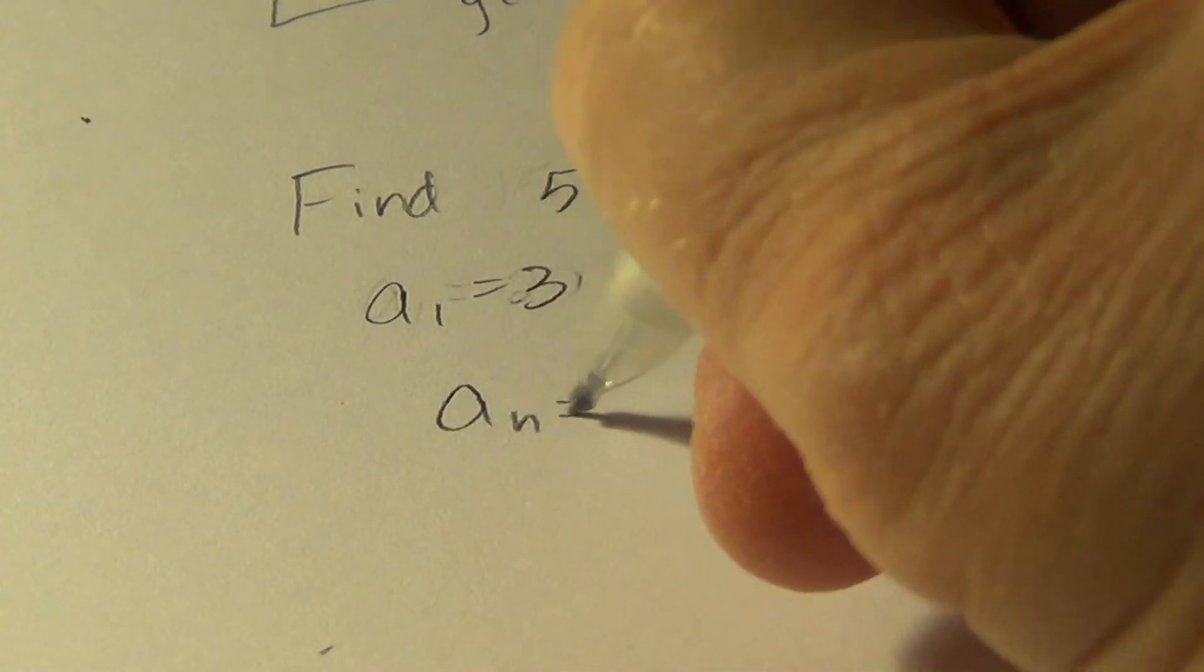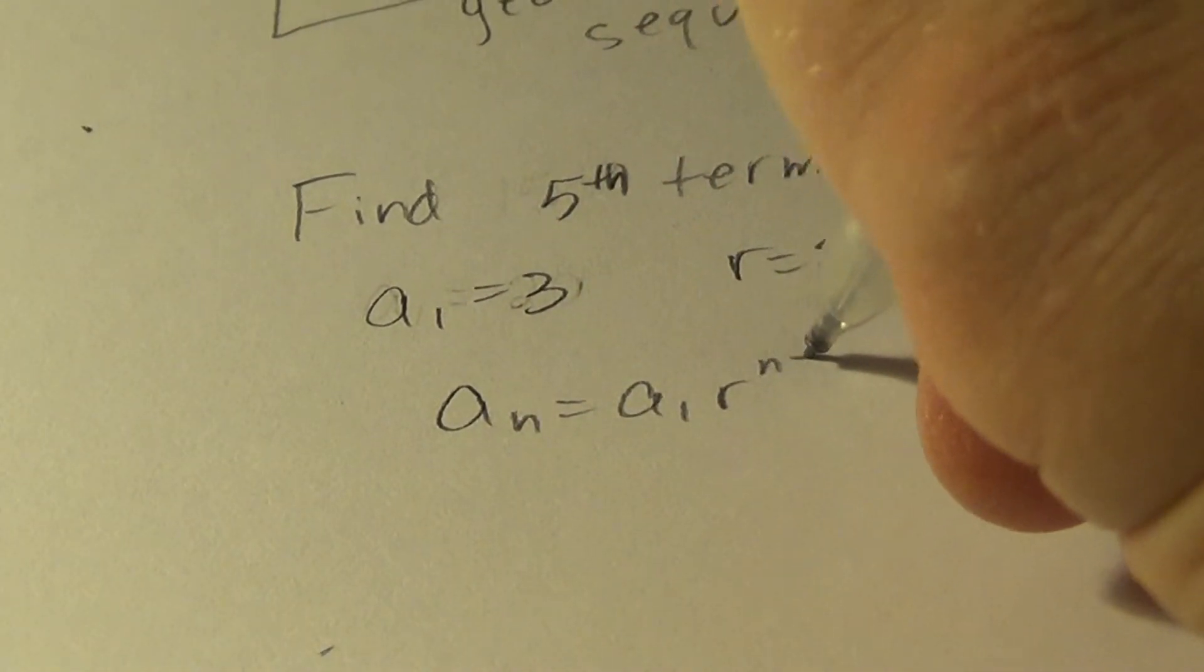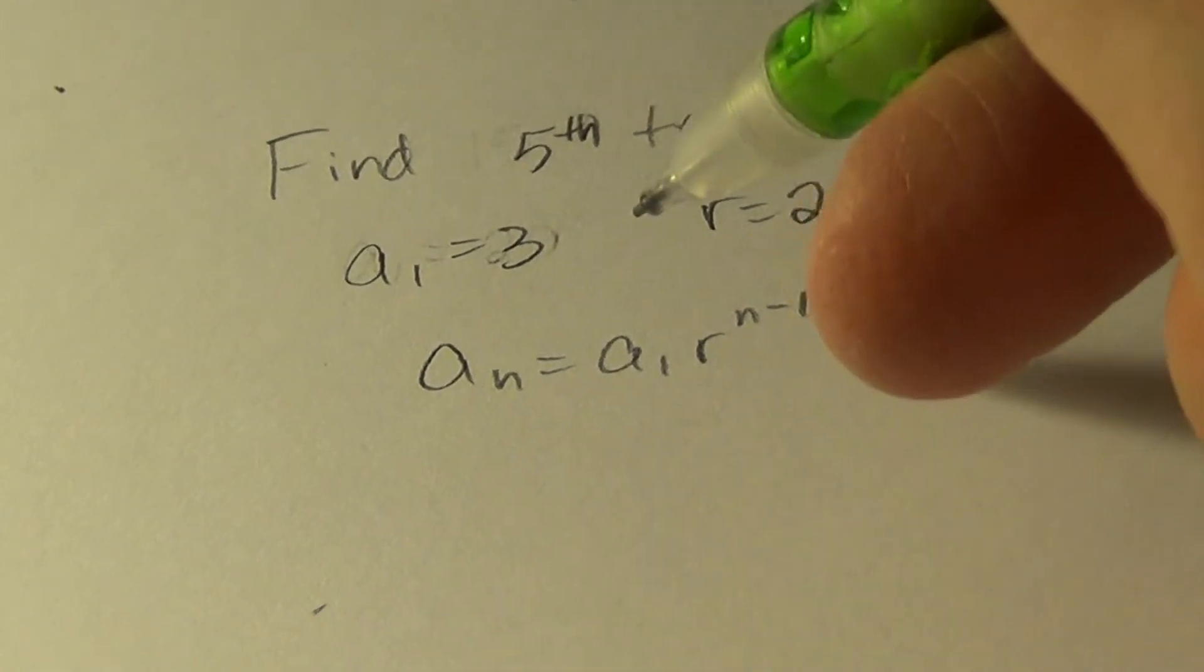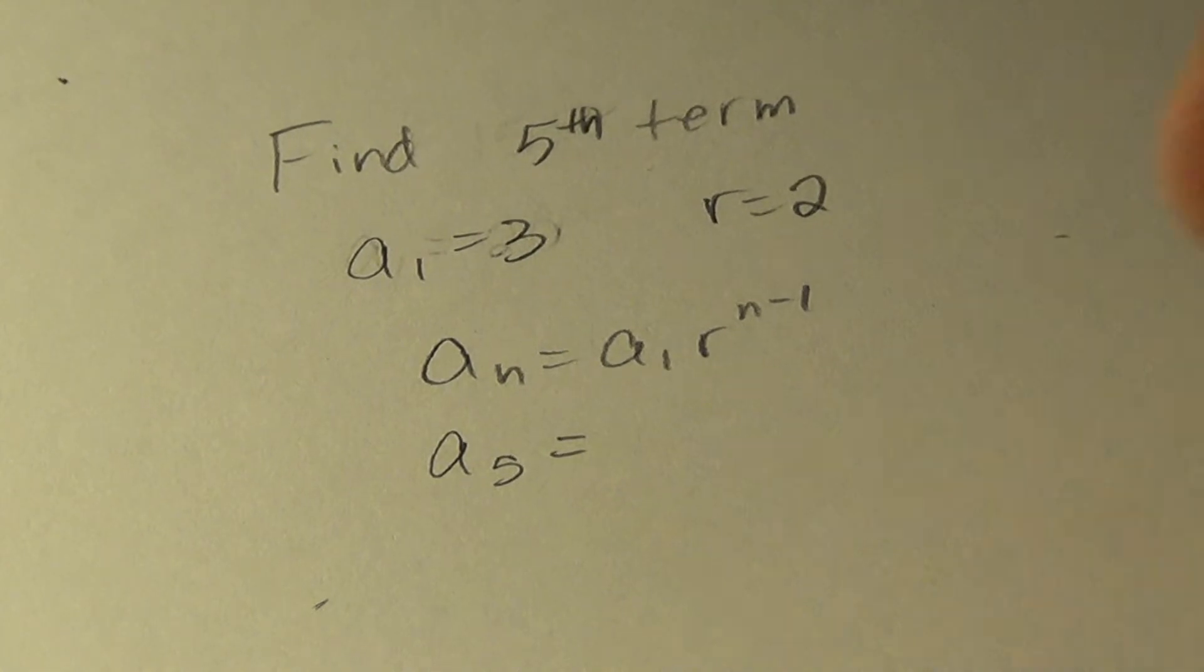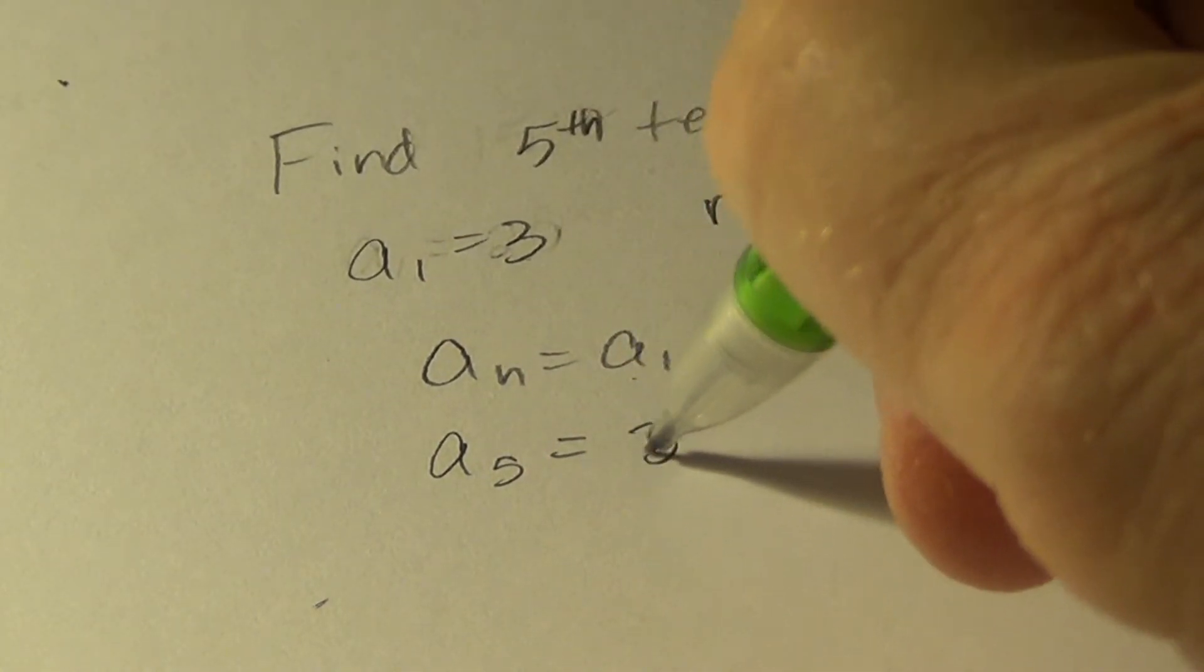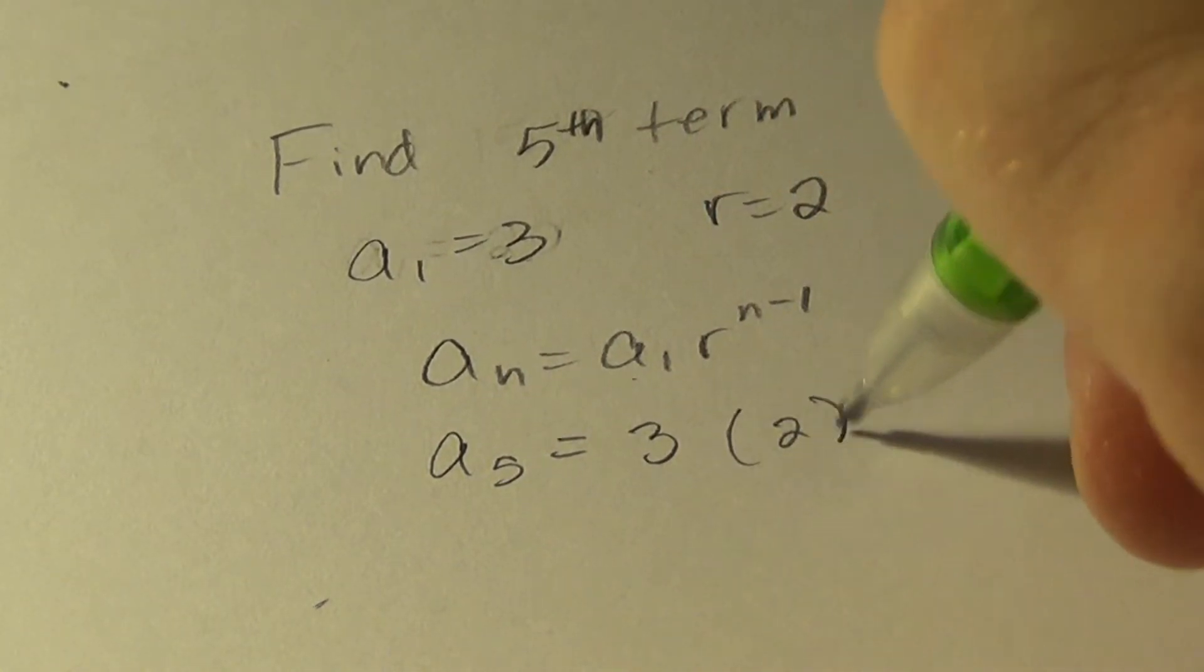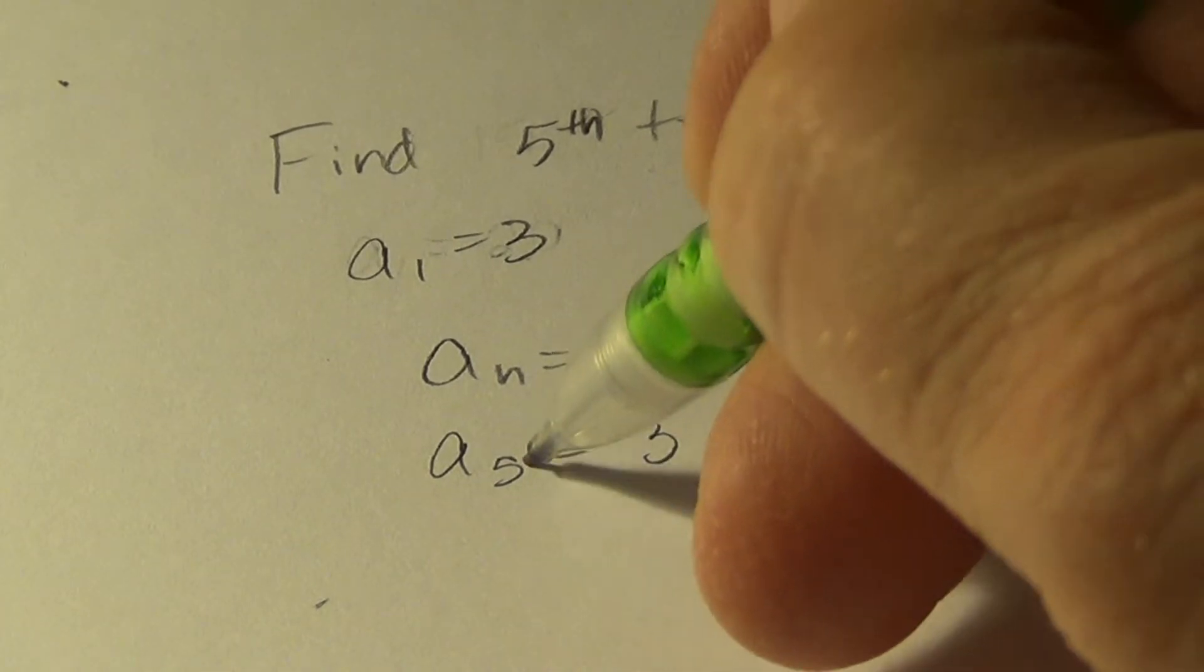So I will use the formula. A sub n equals A sub one R to the n minus one. A sub n, I'm looking for the fifth term. So that's A sub five equals A sub one given as three, the common ratio given. And remember, n is five. Five minus one.